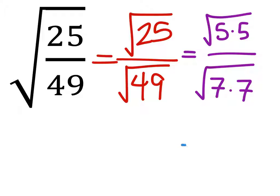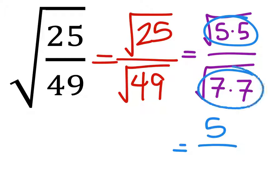So this ends up being, we've got a pair of 5s right here, and a pair of 7s right here. 5 over 7 is our answer.